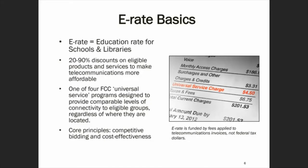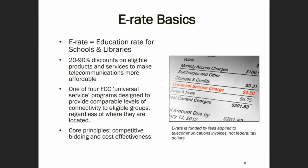Schools and libraries participating in this program get discounts on internet access, internal networking equipment, and the discounts depend on the level of poverty in the area. A lot of Kentucky libraries are near the top of the bracket, but the discounts range from 20% to 90%. Two of the core principles of the E-Rate program are competitive bidding and cost effectiveness. Competitive bidding is meant to drive down costs, and when evaluating bids, libraries have to choose the most cost effective solution — meaning the E-Rate eligible cost is the primary factor.